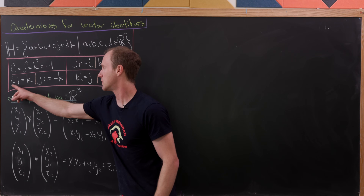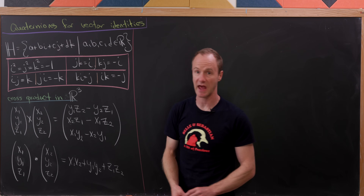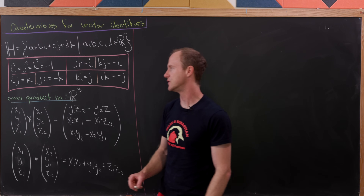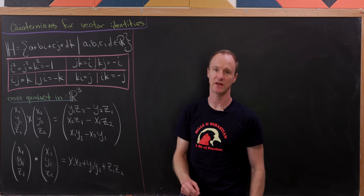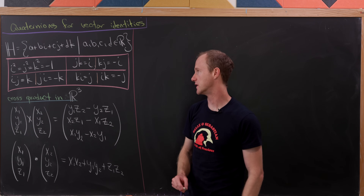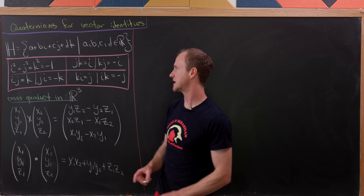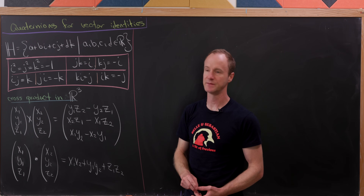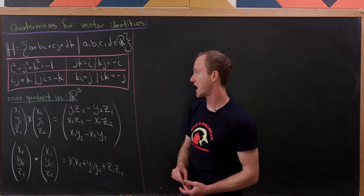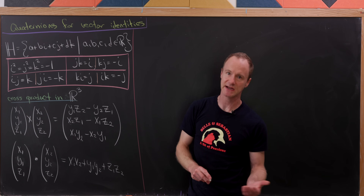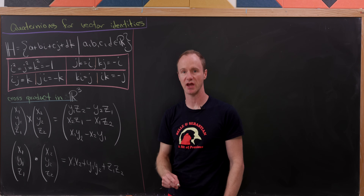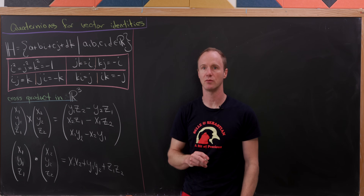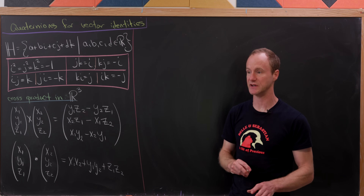If you multiply i with j, you get k. Whereas if you do the opposite and multiply j times i, you get negative k. So it's not commutative. Furthermore, j times k is i, whereas k times j is negative i. And k times i is j, whereas i times k is negative j.